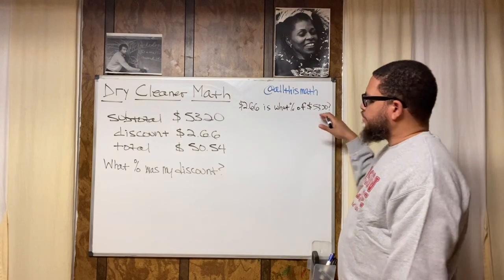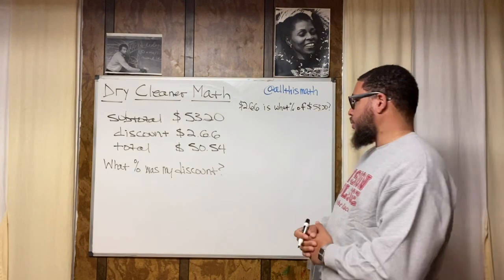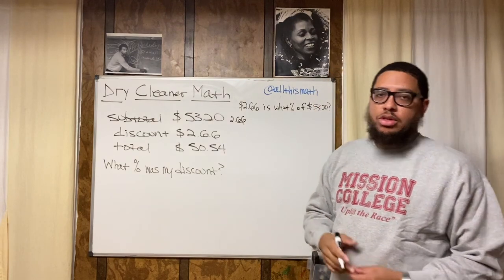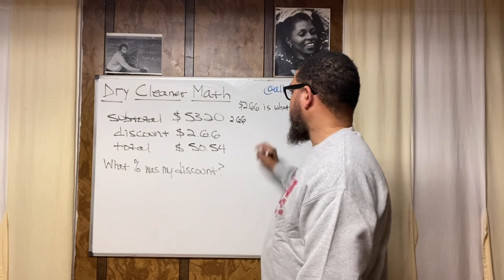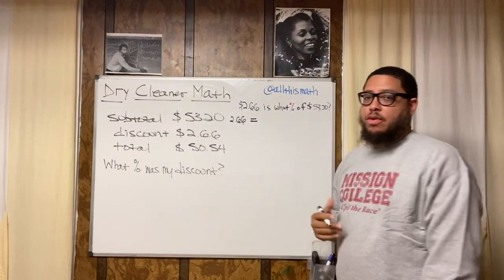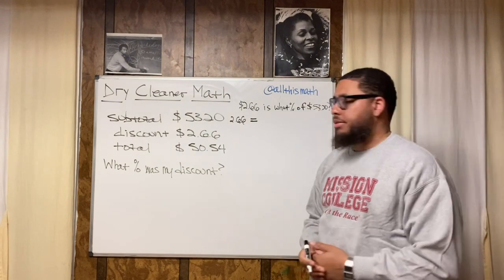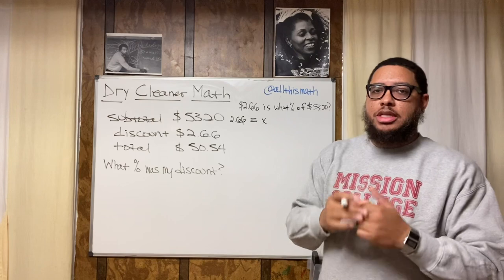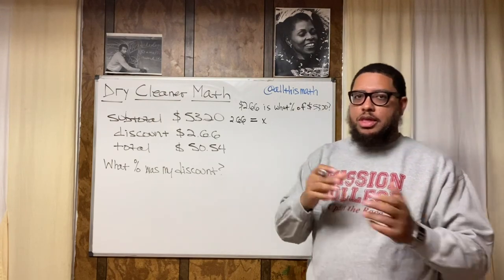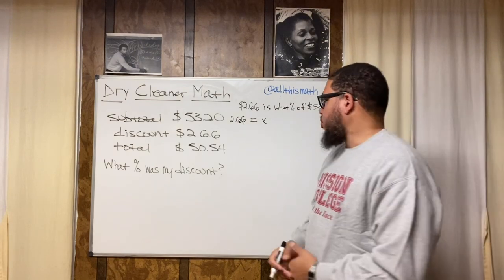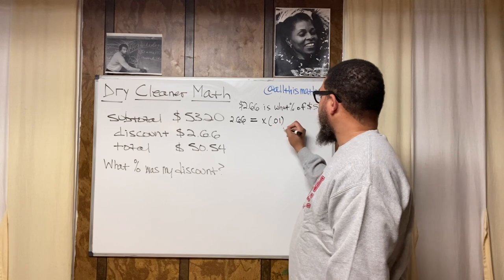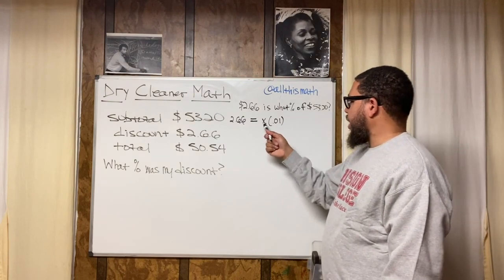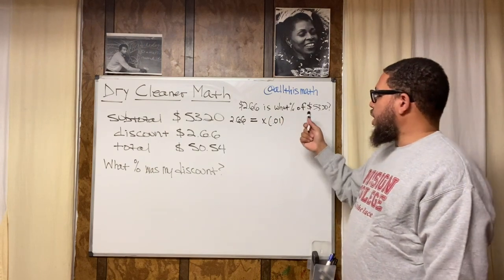If I want to translate this into an equation, I'm converting from English to mathematical language. My numbers stay the same: 2.66. The word 'is' in most contexts means equals sign, so 2.66 equals. The word 'what' represents an unknown value, so I use x. 'Percent' means out of 100, so we convert to 0.01. 'What percent' means x times 0.01. And the word 'of' means multiply.